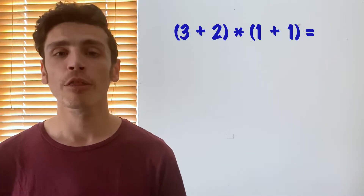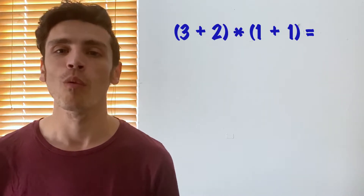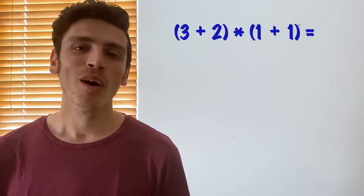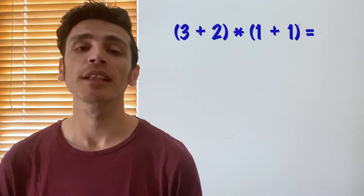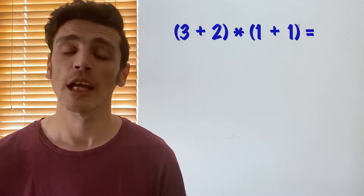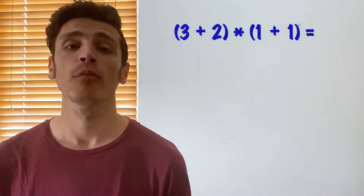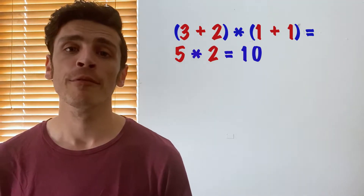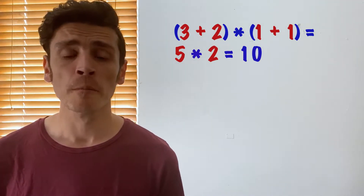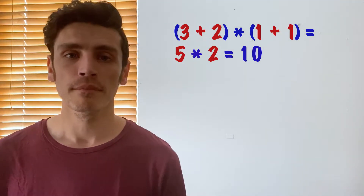So let's look at the problem of bracket 3 plus 2 multiplied by the bracket of 1 plus 1. If we used order of operations we would solve what's inside the brackets first, so we would do the additions and then multiply the results together. So 3 plus 2 gives me 5, and 1 plus 1 gives me 2, and then 5 multiplied by 2 gives me 10.